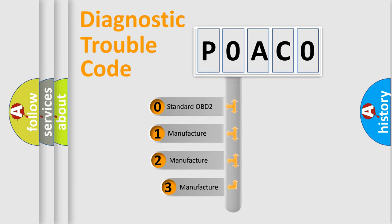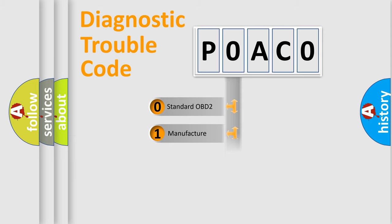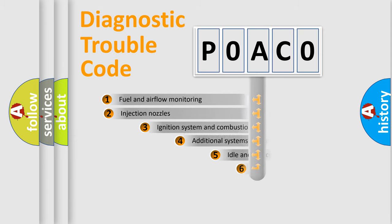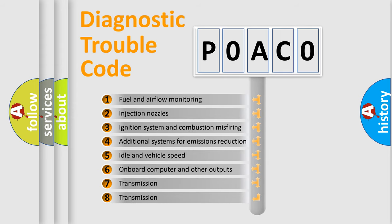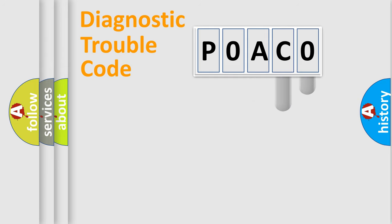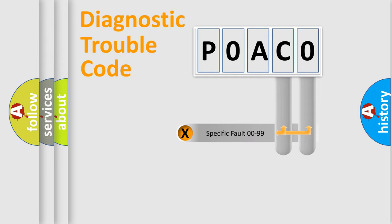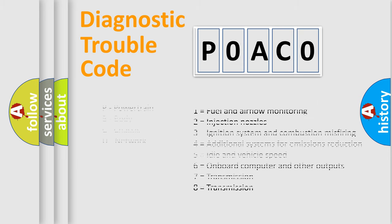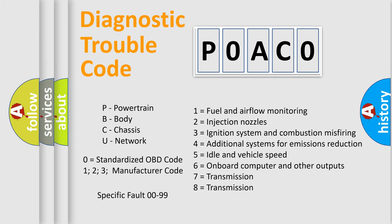If the second character is expressed as zero, it is a standardized error. In the case of numbers 1, 2, or 3, it is a more manufacturer-specific expression of the car's error. The third character specifies a subset of errors. This distribution is valid only for the standardized DTC code. Only the last two characters define the specific fault of the group — but only when the second character is zero.